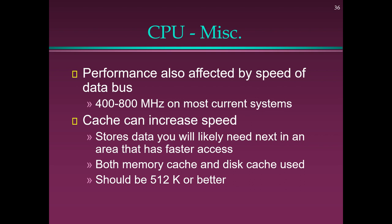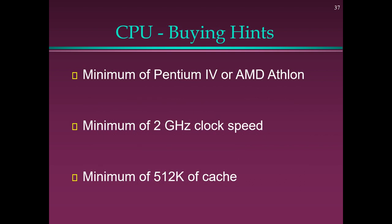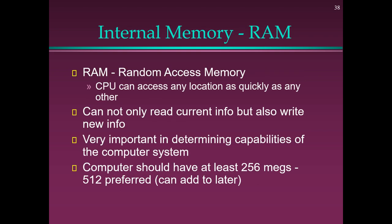CPU Performance is also affected by the speed of the data bus (400–800 MHz on most current systems) and cache memory, which stores data you will likely need next in an area with faster access. Both memory cache and disk cache are used; cache should be 512K or better. CPU Buying Hints: Minimum Pentium 4 or AMD Athlon, minimum 2 GHz clock speed, minimum 512K of cache.